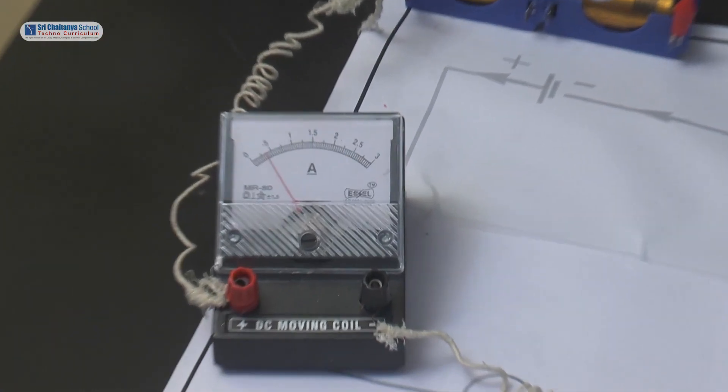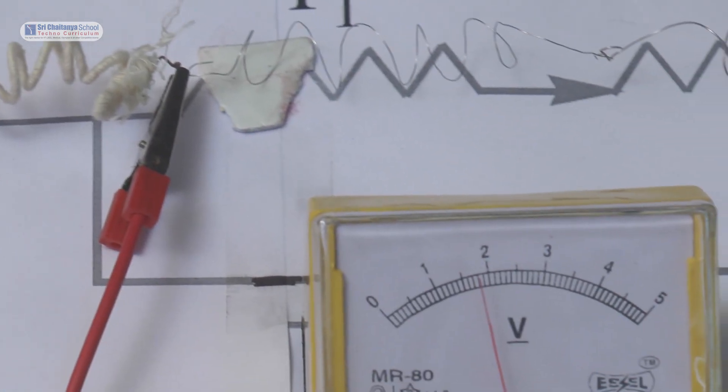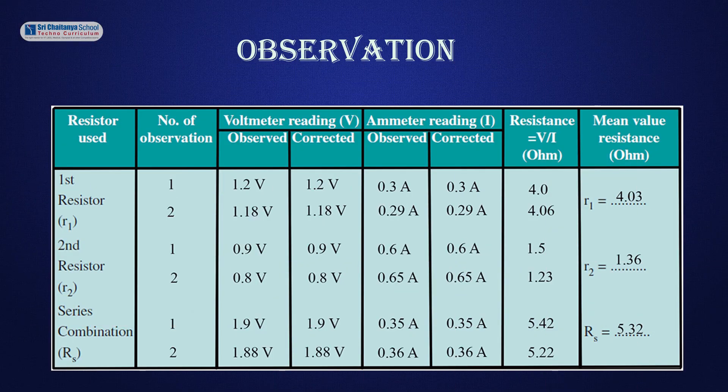When these two resistors are connected in series combination in the circuit, the ammeter reading is 0.35 ampere and voltmeter reading is 1.9 volts, and the corresponding resistance is 5.42 ohm. In trial 2, the ammeter reading is 0.36 ampere and voltmeter reading is 1.88 volts, and the corresponding resistance is 5.22 ohm.